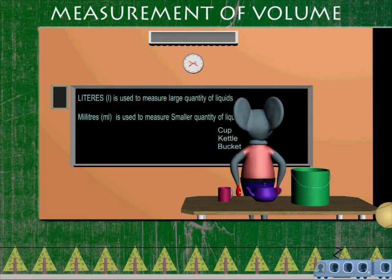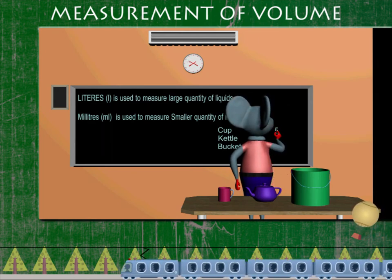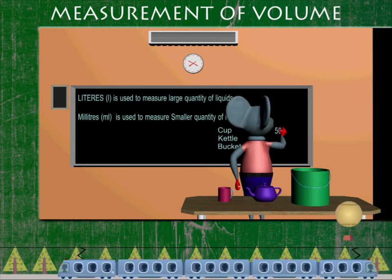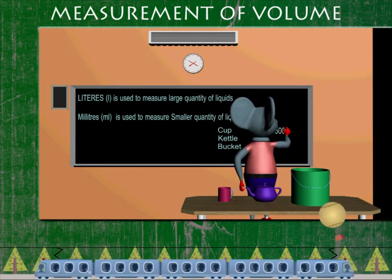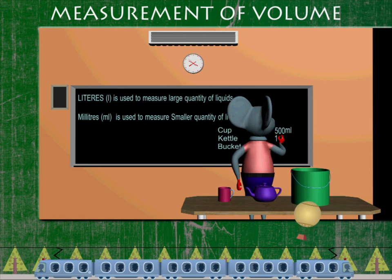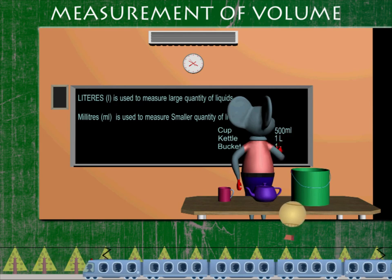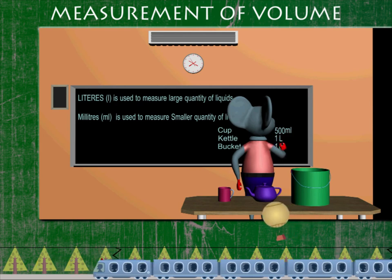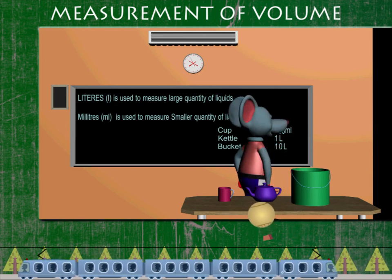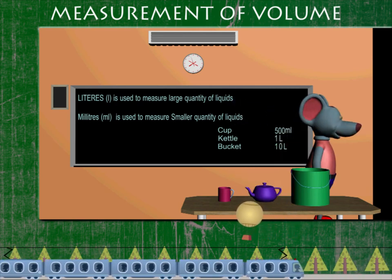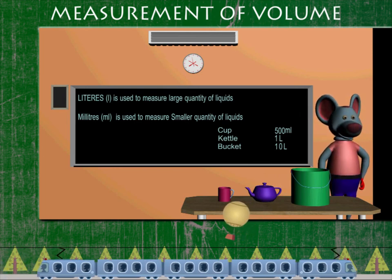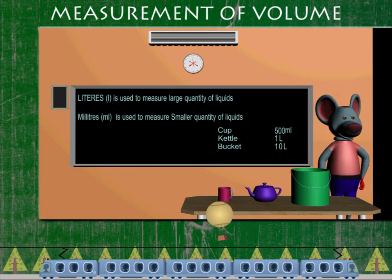A cup can carry 500 millilitres of a liquid. A kettle can carry 1 litre and a bucket 10 litres. Good going Robby!